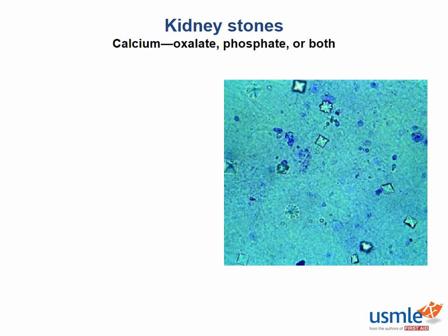There are four kinds of kidney stones, each with its own special characteristics. By far the most common are calcium-containing stones, either calcium oxalate or calcium phosphate. For calcium oxalate stones, they appear pretty similar to the back of an envelope. You can see a few of them under the microscope here — keep this image in mind for test day, since something like this just might show up.